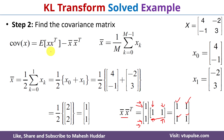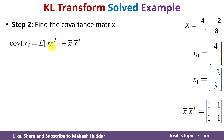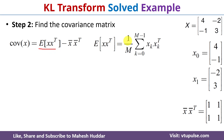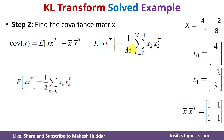Next we need to find the expected value of x multiplied with transpose of x. To find this we use the formula: 1 divided by m, summation of x_k times x_k transpose, where k goes from 0 to m minus 1. We already know m equals 2, so we get 1/2 times summation of x_k times x_k transpose where k goes from 0 to 1.